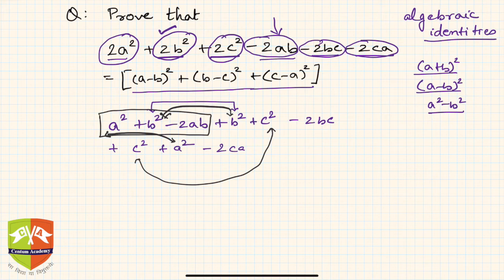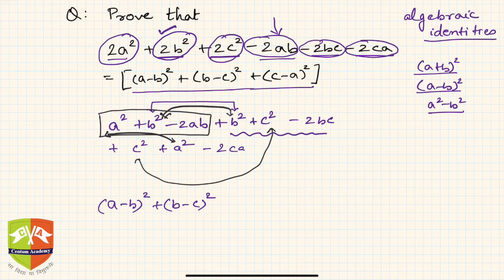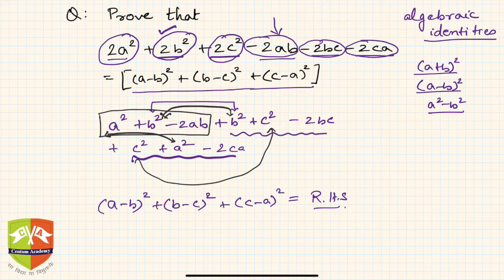The beautiful part is each group gives a perfect square. The first group is nothing but (a-b)², the second group b² + c² - 2bc is (b-c)², and the last group is (c-a)², which equals the right-hand side. So if you know algebraic identities, you can prove these kinds of expressions very simply.